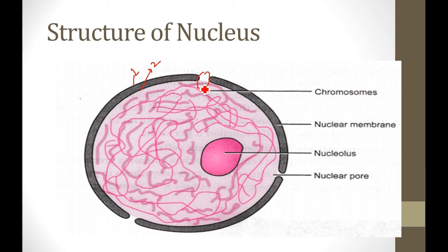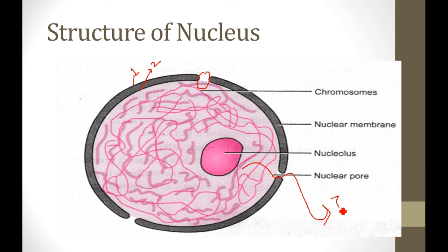Between the two membranes you can see a space. This space is known as the nuclear pore. The nuclear pore allows materials to enter and exit the nucleus — proteins go from the cell into the nucleus through the nuclear pore.